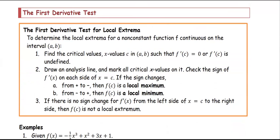The first derivative test for local extrema: to determine the local extrema for a non-constant function f continuous on the interval (a, b). First, find the critical values — the x equals c values on the open interval such that f'(c) equals zero or f'(c) is undefined. Second, draw the analysis line, as we did in the previous section, and mark all the critical x values on it. Then determine the sign of f' on each side of x equals c.